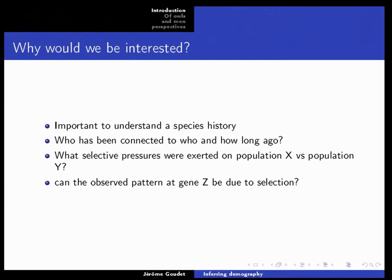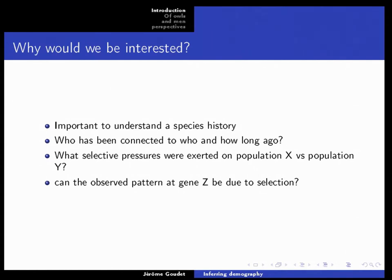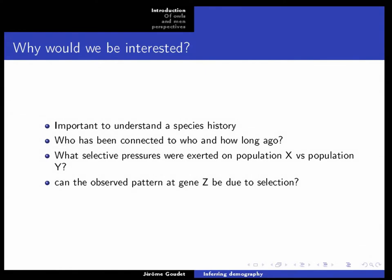Connected to this is who has been connected to whom, and how long ago — has there been recent migration between populations, or does that date back further? This relates to speciation and how differentiated groups of populations are. We might also be interested in selective pressures: if a species suddenly moves into a mountain environment or a new habitat, what genomic changes can we detect there?